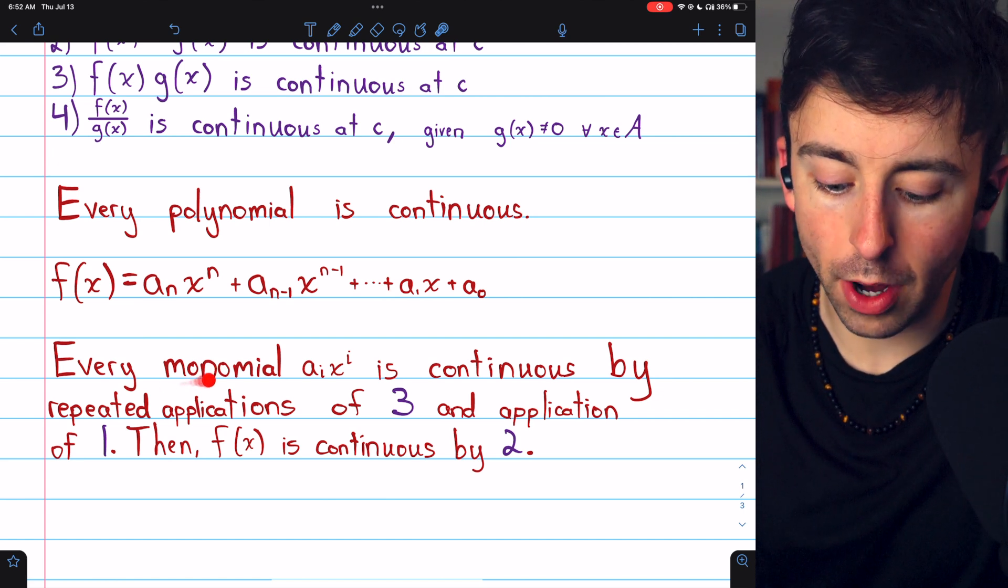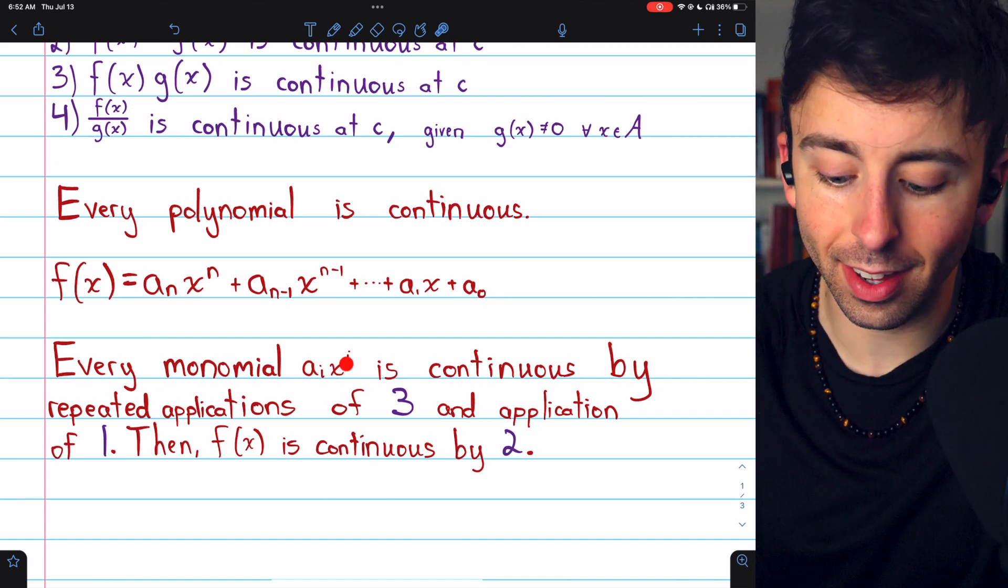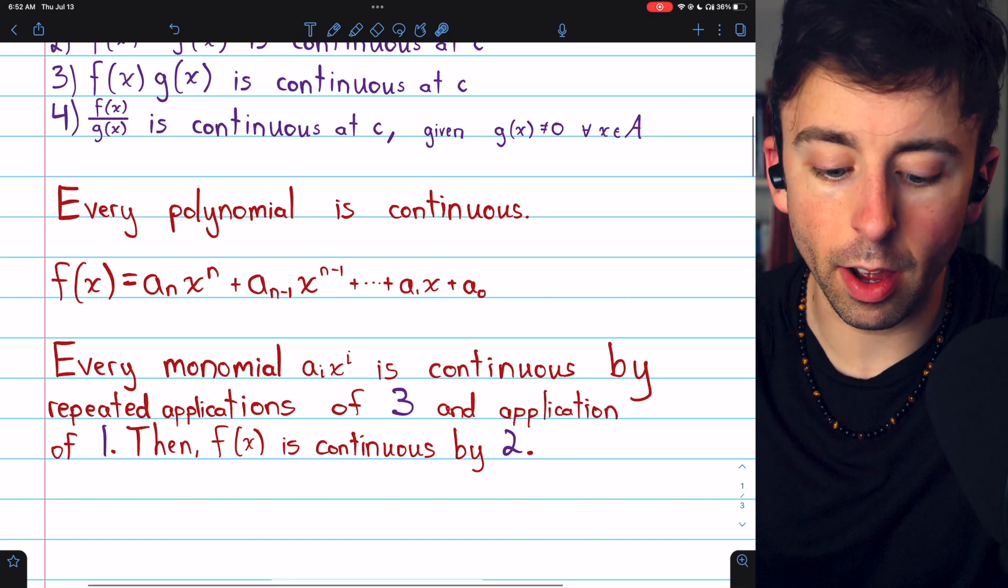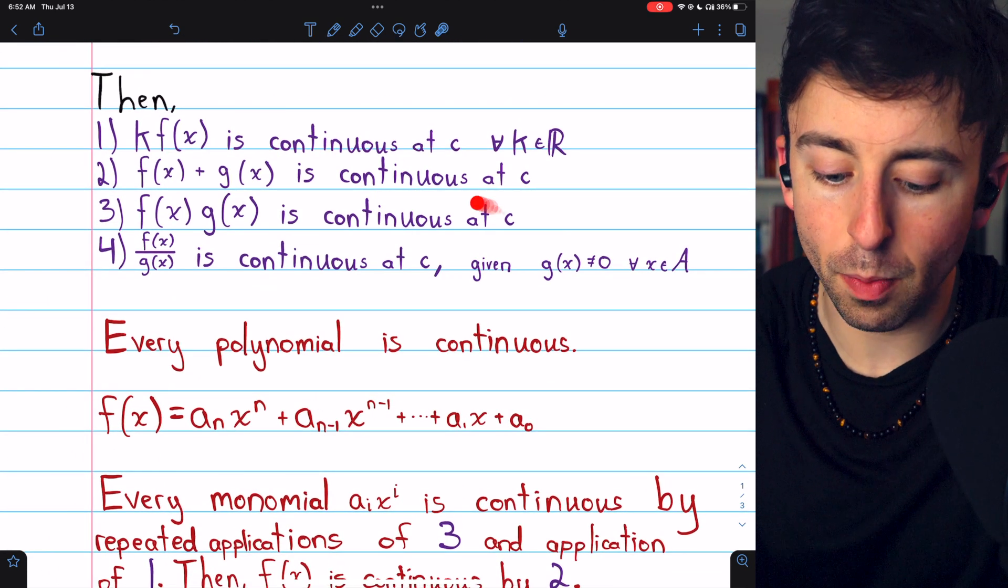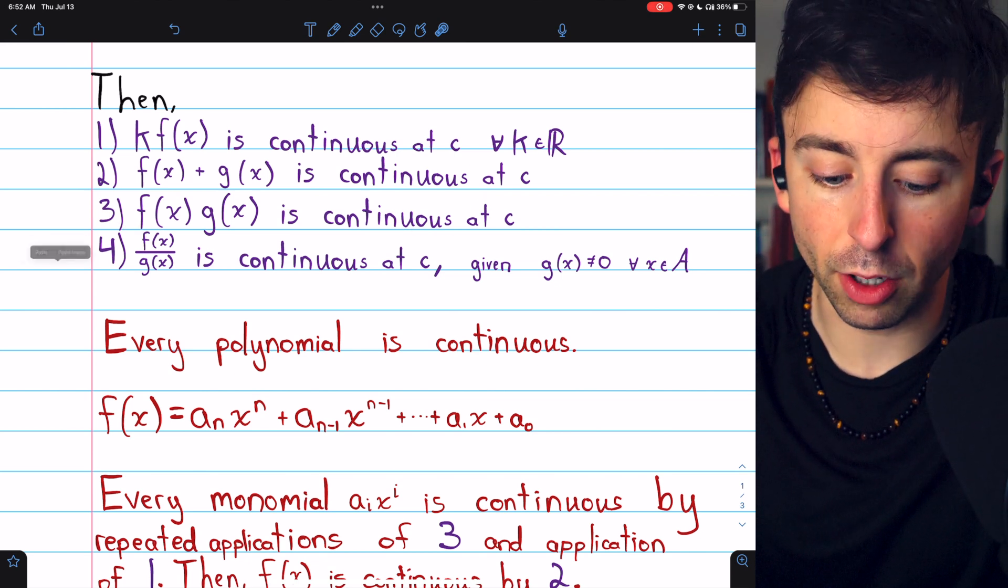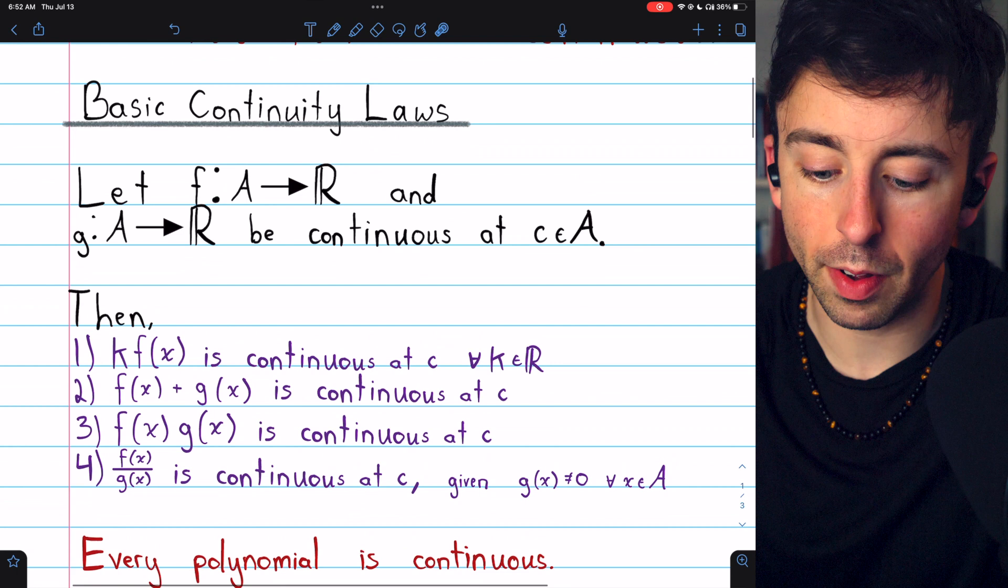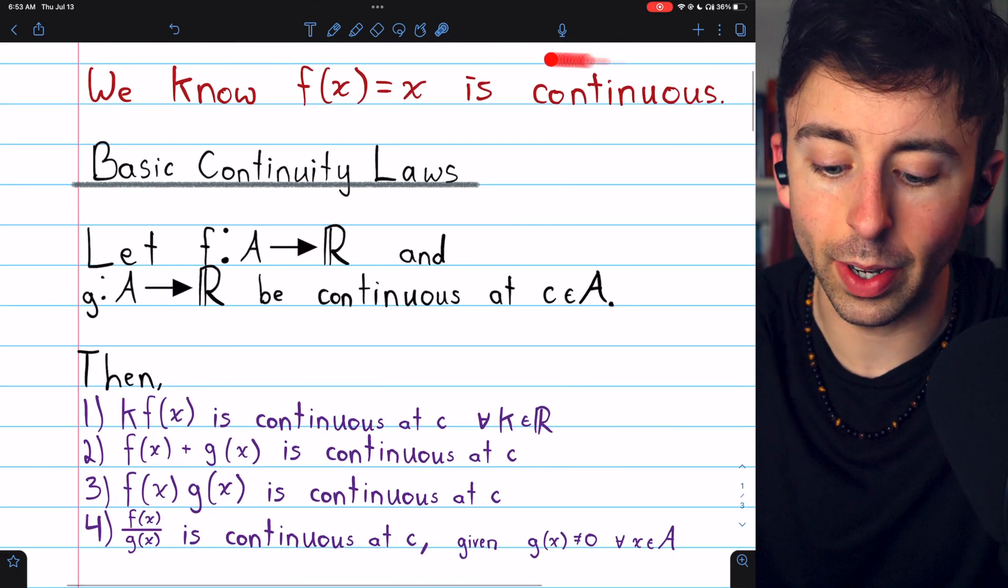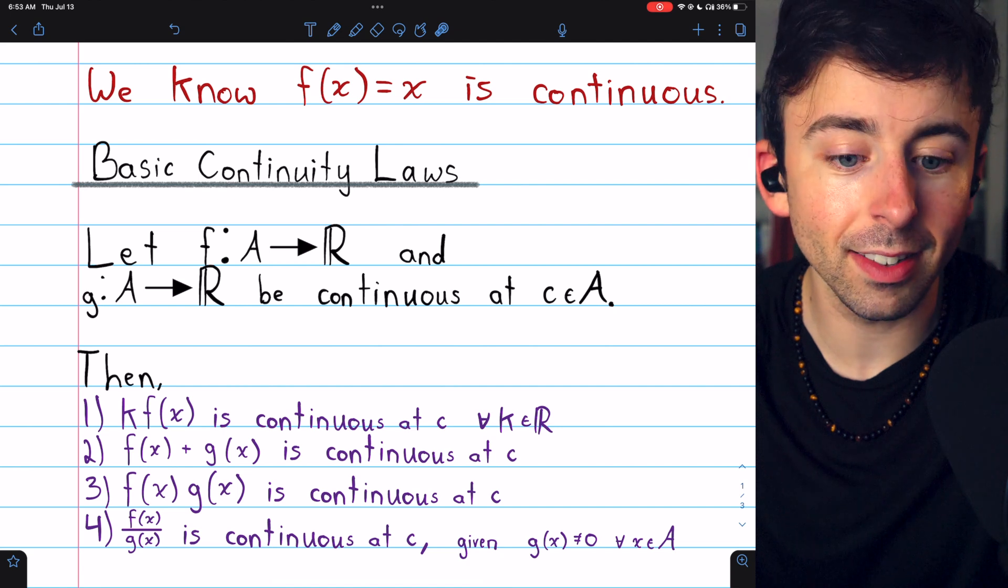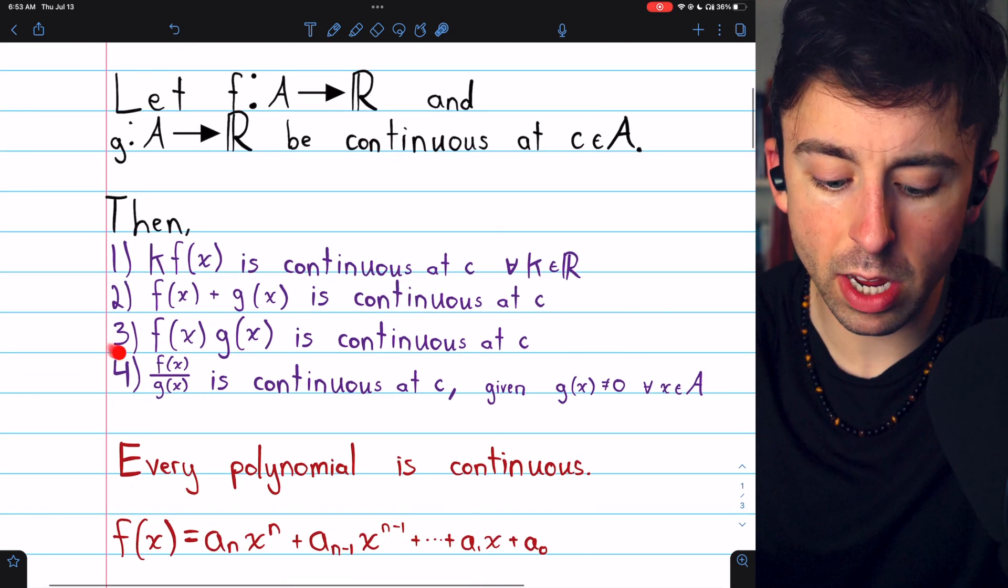We know that every monomial a_i times x to the i is continuous by repeated applications of law three here that the product of continuous functions is continuous. That's because we know the identity function f of x equals x is continuous. So to get any positive integer power of x, we can just apply law three over and over again.